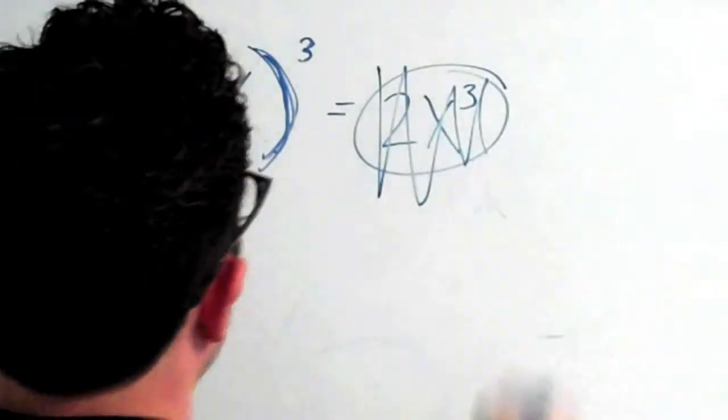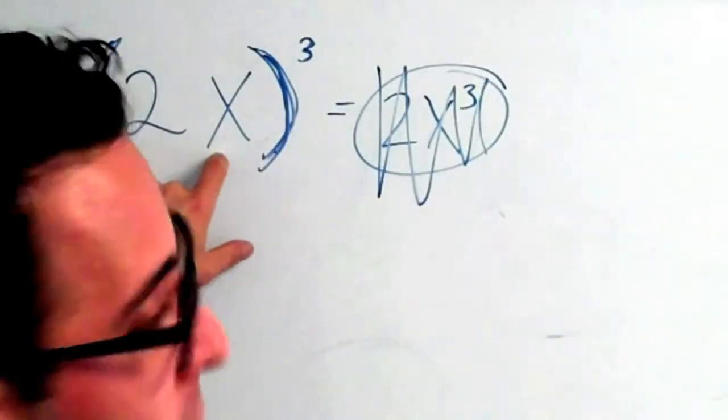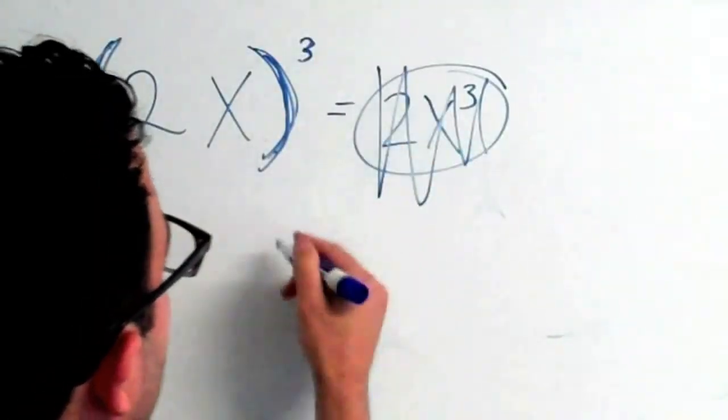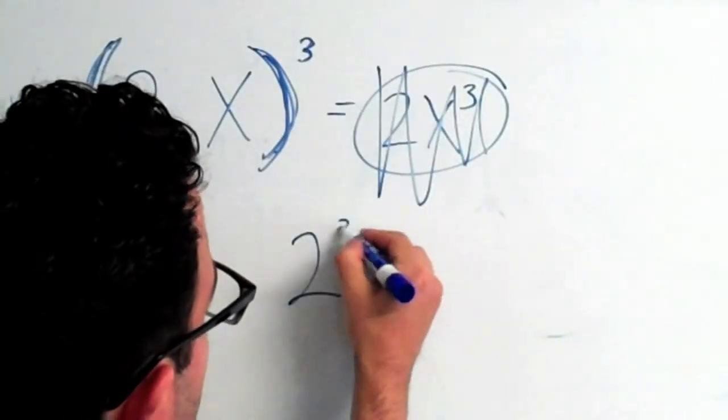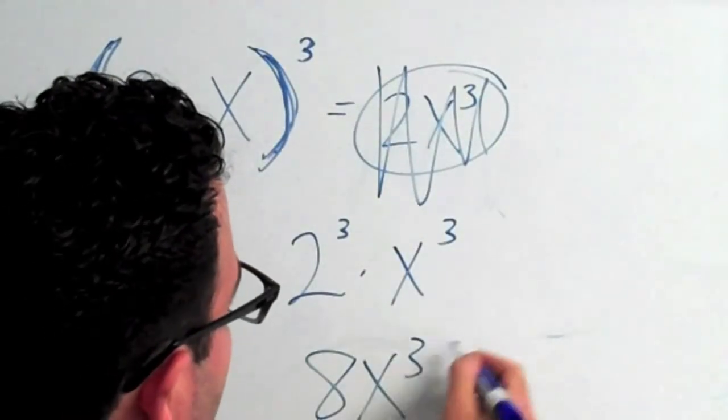Do not do that. What you're going to do is apply the exponent to each entity in the parentheses. So the answer to 2x in parentheses cubed is the same thing as 2 cubed times x cubed. The answer is 8x cubed.